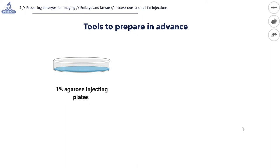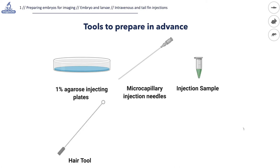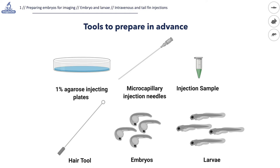To start, we need to prepare in advance: 1% agarose injecting plates, borosilicate glass microcapillary injection needles using a micropipette puller device, the injection sample, a hair tool to manipulate the fish, and of course the fish in the required developmental stage.